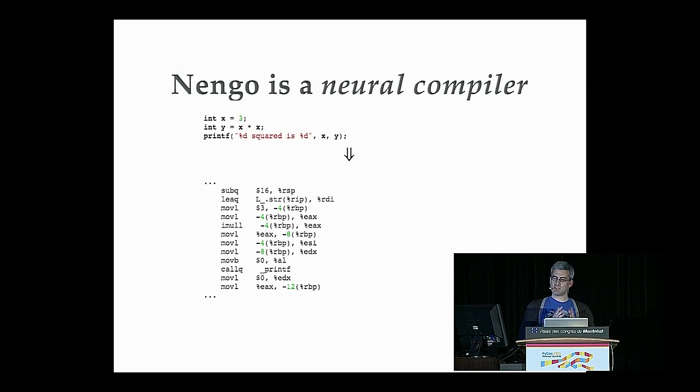And essentially what this allows us to do is to work on a higher level of abstraction than if we were just making neurons and connecting them together individually. So a good analogy for this is compilers in computing. So you can think about this little snippet of C code, pretty understandable what it does, but if you go down to the assembler level, it's quite difficult to understand. And even this is just kind of a shorthand for binary instructions, also very hard to understand.